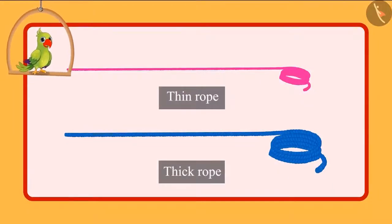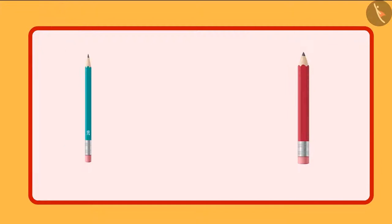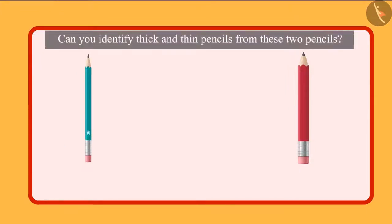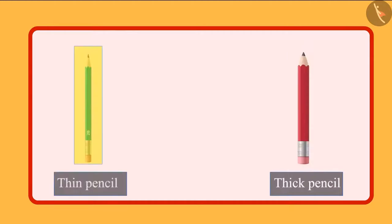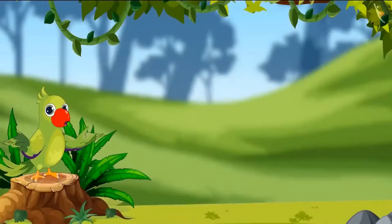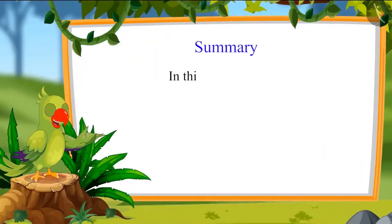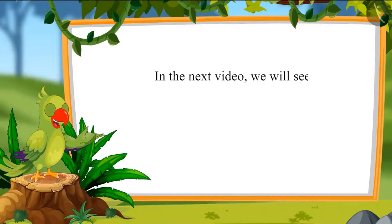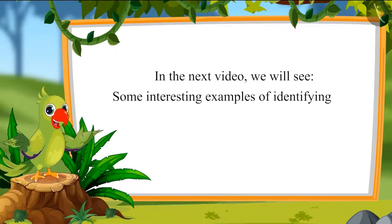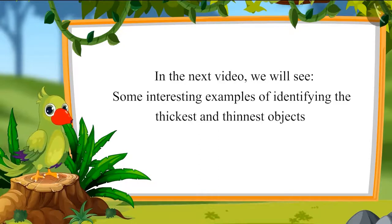Children, you should make a swing with this thick rope. It won't break when you sit. Do you think this rope is thicker than the previous rope? We will make a swing with this rope because this rope is thicker. Well done children, you were right. Come on, let me help you to hang this swing. After hanging the swing, Chotu and Pinky swung a lot and had fun. So children, you saw Chotu and Pinky chose the thick rope instead of the thin rope to hang a swing. Can you identify thick and thin pencil from these two pencils? Yes, this is thick pencil and this is thin pencil. In this video, we saw some interesting examples of identifying thick and thin objects. Bye children.